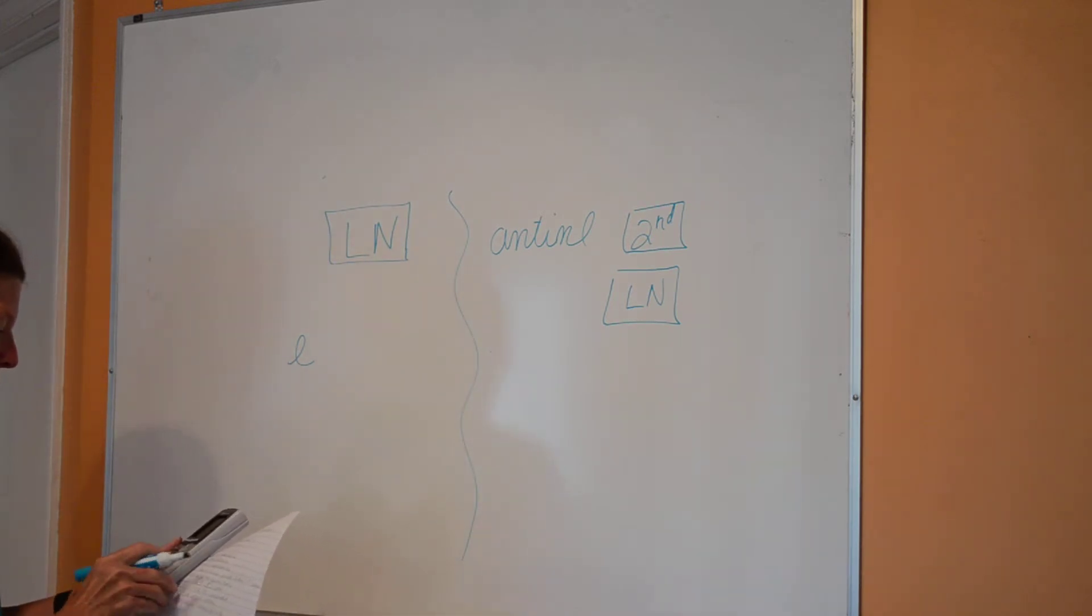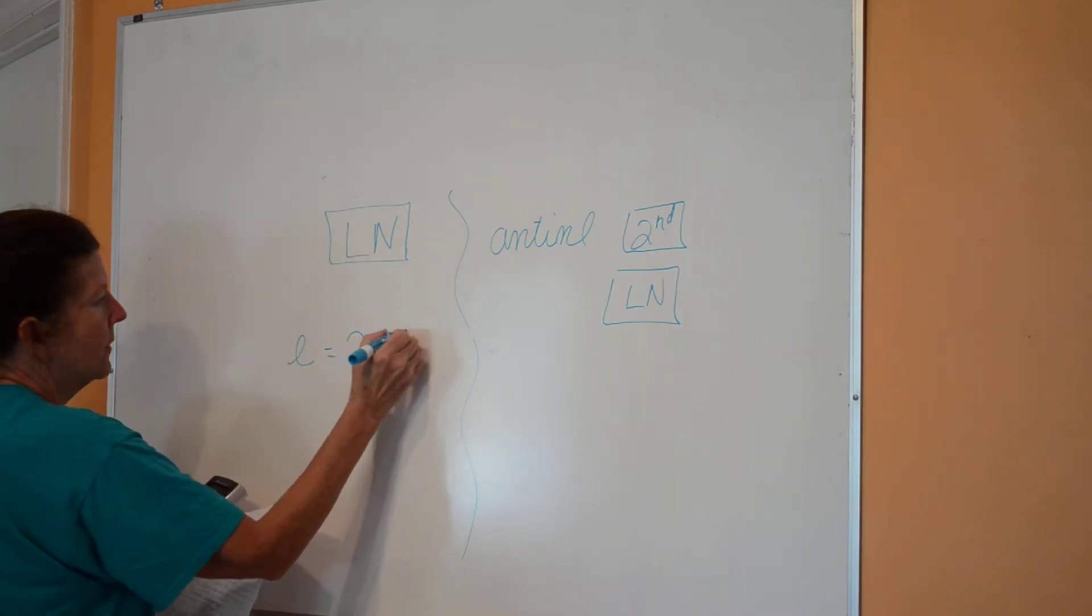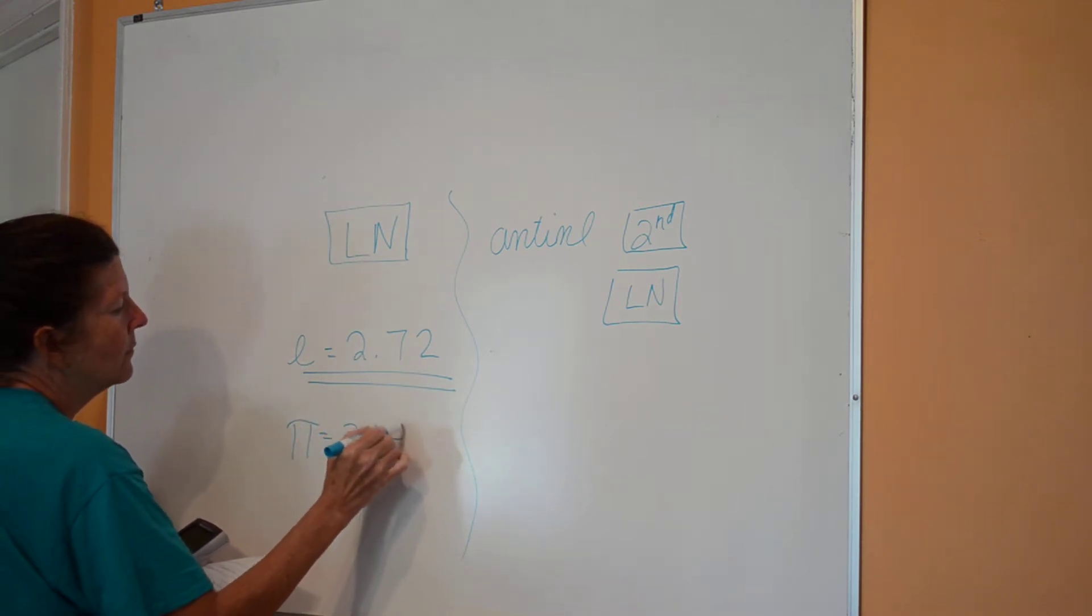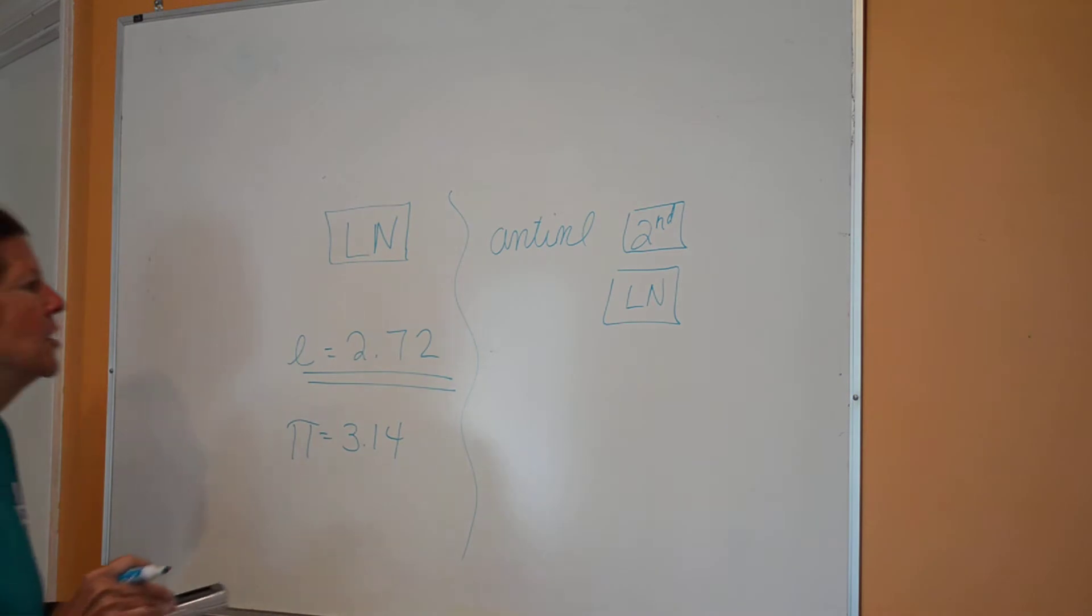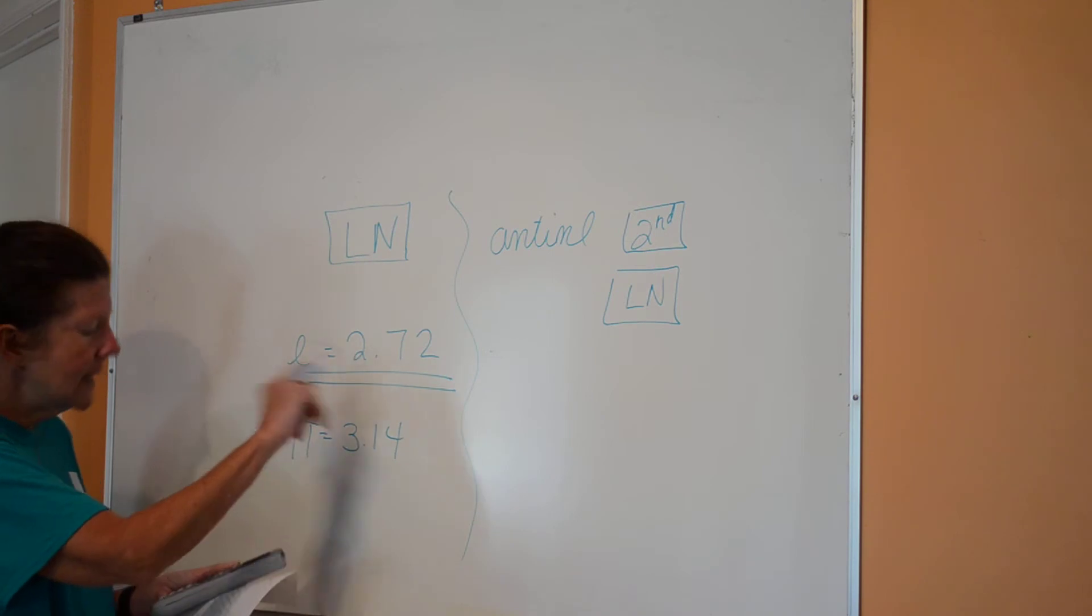So if you pick up your calculator, you will find the e right above the division sign. So if I do second and then division sign, that's going to put an e on your calculator, and you press enter, you'll find that e rounded off is that value. Just like pi has a value of 3.14, e always has a value of 2.72. And that's rounded off, just like pi never ends, e never ends.